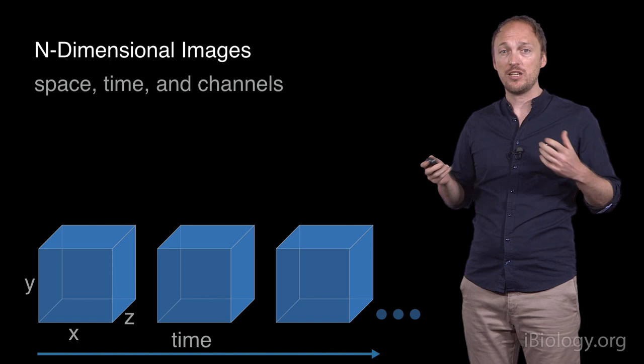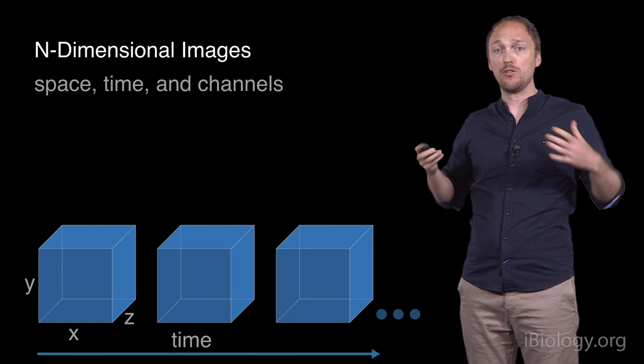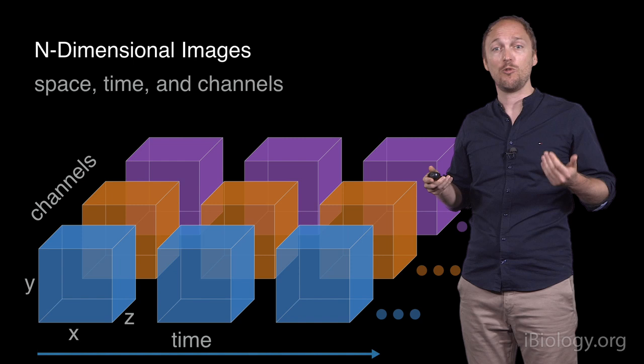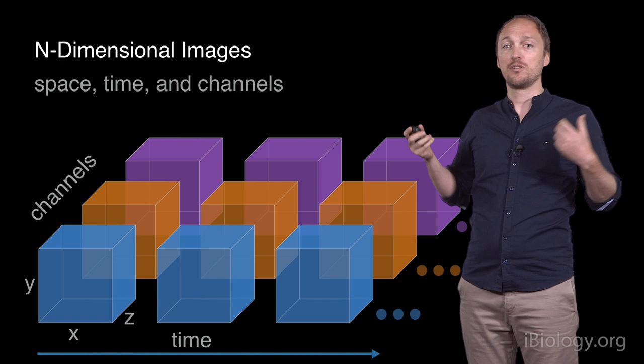But typically, we don't just acquire a single image. In the case of live imaging, you typically acquire time-lapses consisting of multiple stacks obtained at regular intervals. You can also acquire multiple channels that might represent different imaging wavelengths, or imaging modalities, such as different fluorescent labels, different label-free modalities, etc.